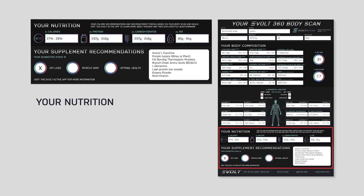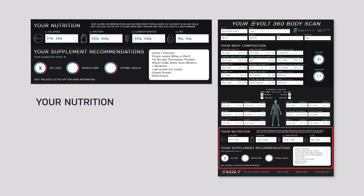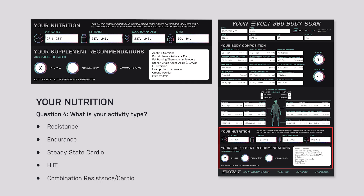After picking your body type, you select how often you exercise and how active you are. Each box you click on will show you a description of what you've selected.